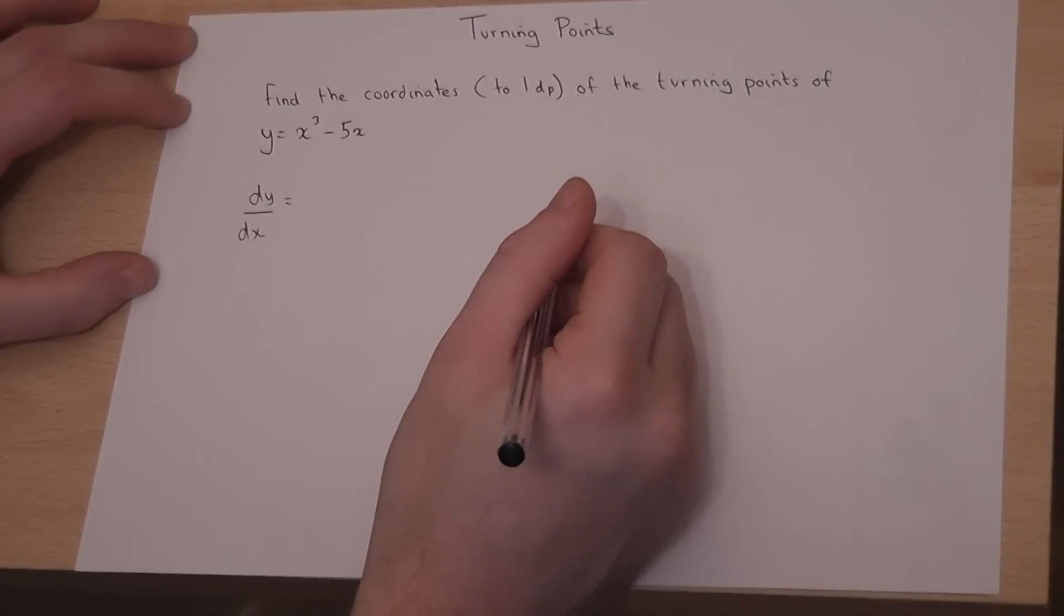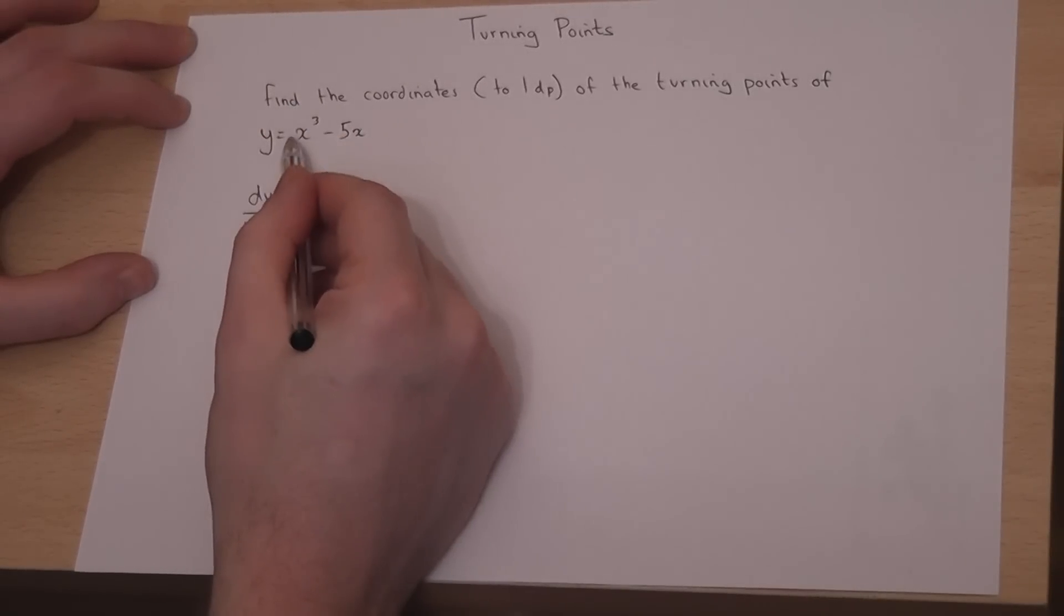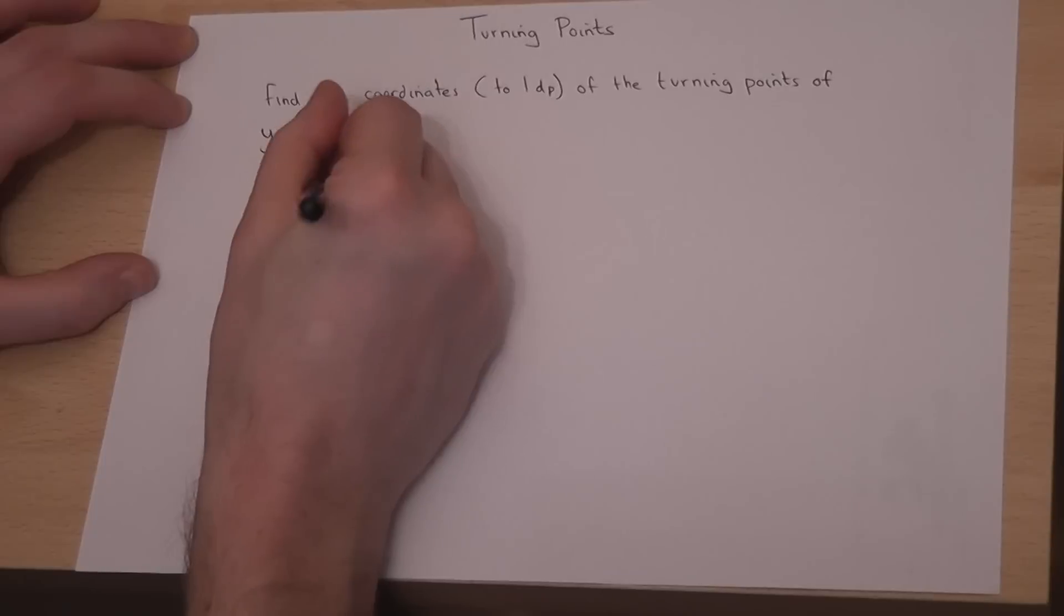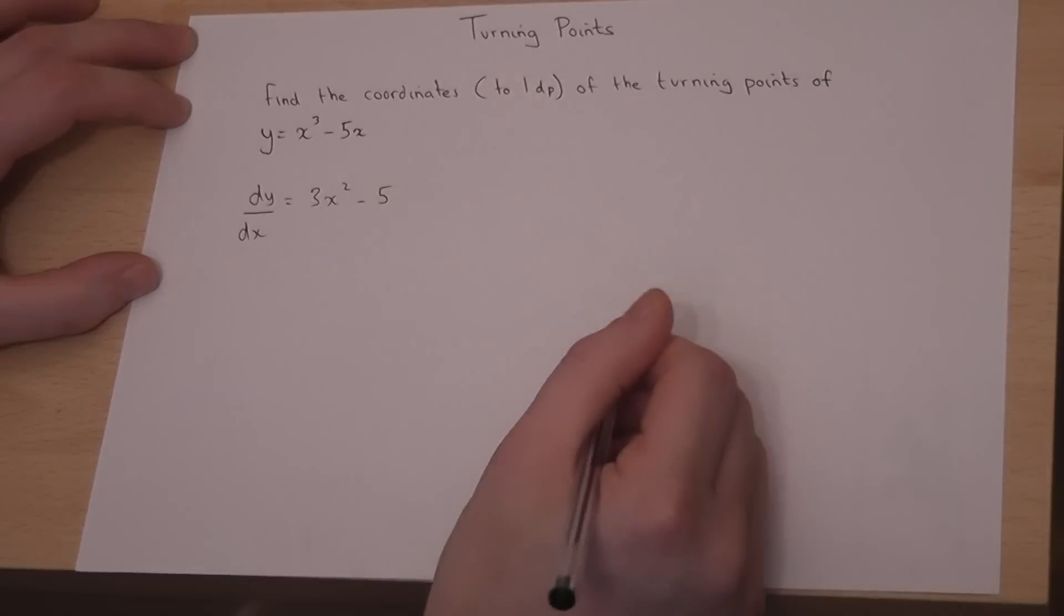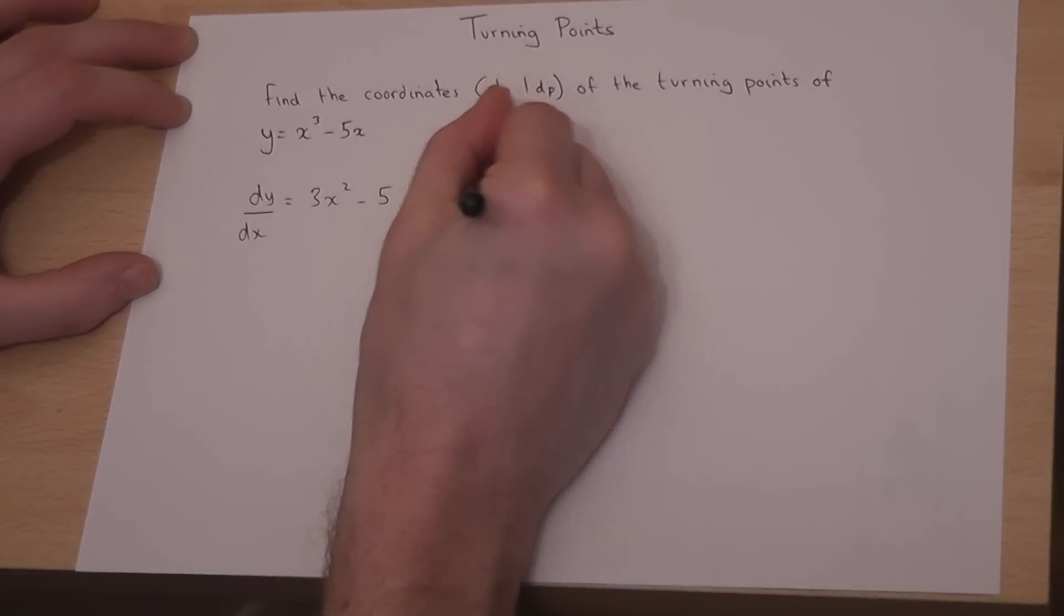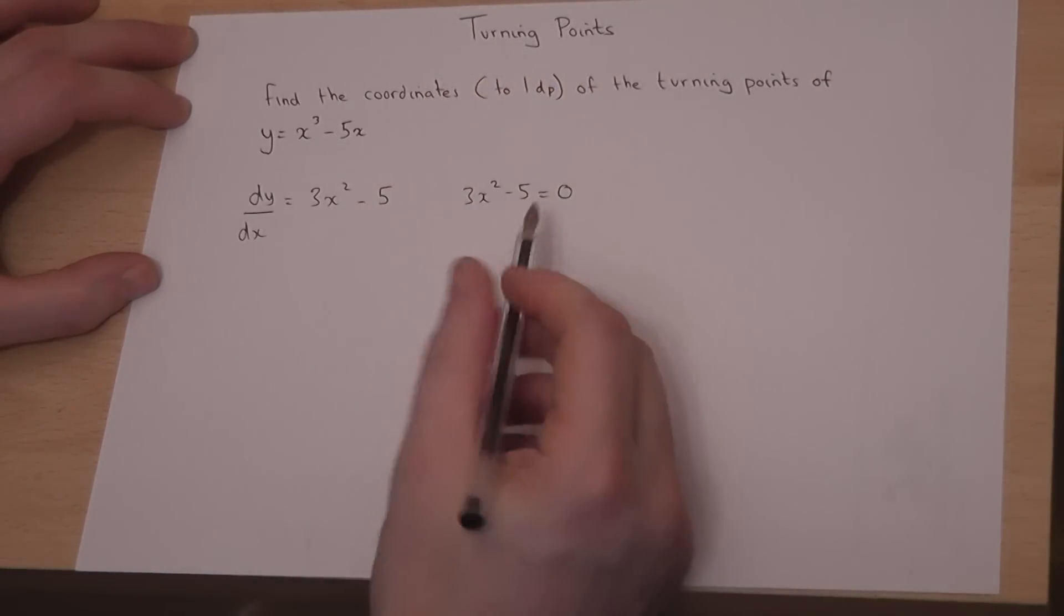So if I find dy by dx, again I times by the power and take one off the power. I get 3x squared from the first term, and 5x just goes to 5. So the question is, where does 3x squared take away 5 equals 0? At these values, we will have a turning point.